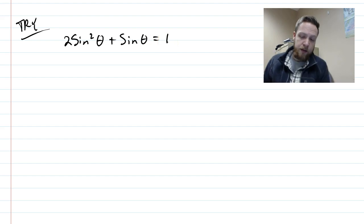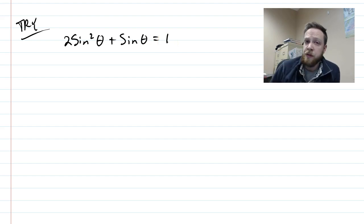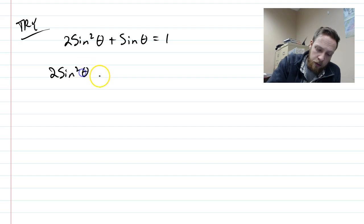Alright, 2 sine squared theta plus sine theta equals 1. And, just a hint here, you don't want to do a GCF. So you should pause the video and try it. Okay, so we're going to subtract 1 over, to get it equal to 0.